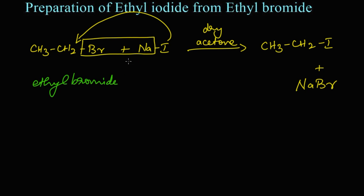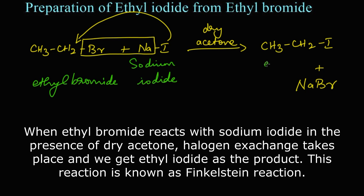Ethyl bromide reacts with sodium iodide; we get ethyl iodide as the product along with sodium bromide. To summarize: ethyl bromide reacts with sodium iodide, halogen exchange takes place in the presence of dry acetone, and we get the product ethyl iodide. This reaction is also known as the Finkelstein reaction. Thank you.